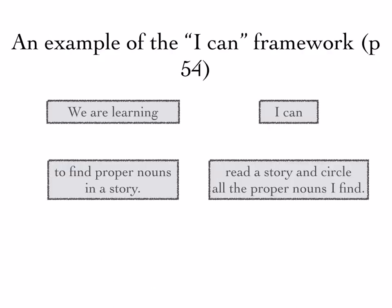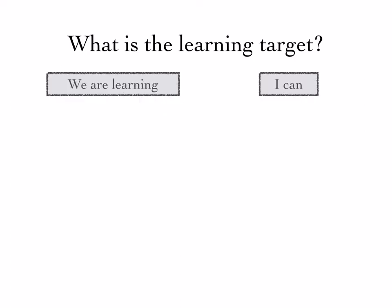One framework that the authors use is the I Can Framework, which is structured under two prompts: 'We are learning' and 'I can.' So what is the content and what is the performance? Here's an example from the book: 'We are learning to find proper nouns in a story.' The performance: 'I can read a story and circle all the proper nouns I find.' With that, I'm going to show you some examples from a kindergarten classroom, and I want you to think about what the learning target is for this activity.